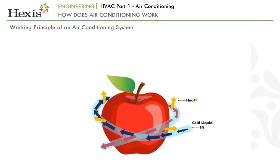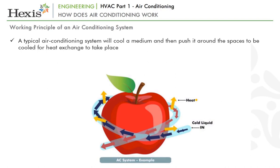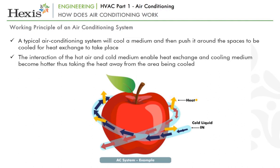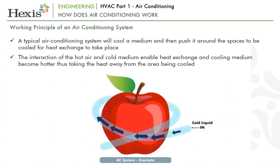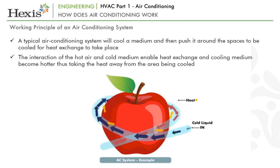A typical air conditioning system will cool a medium — which could be air, water, or gas — and then push it around the spaces to be cooled for heat exchange to take place. The interaction of the hot air and the cold medium enables heat exchange: hot air will become cooler and the cooling medium will become hotter, thus taking the heat away from the area being cooled. For example, a cold liquid passed over an object causes the object to lose heat to the refrigerant liquid, which in turn is heated due to heat absorption.